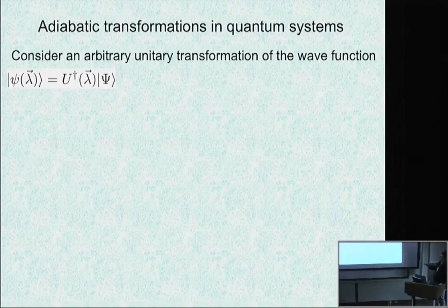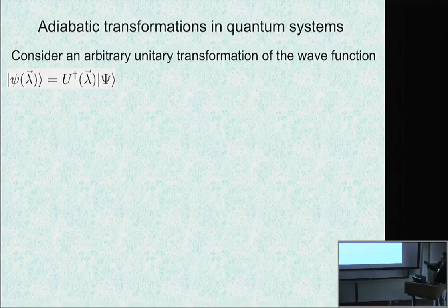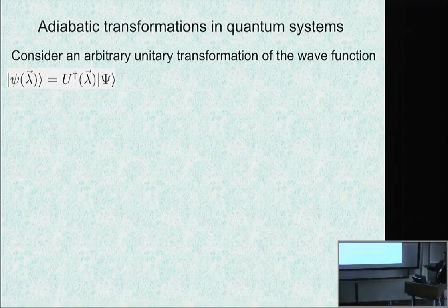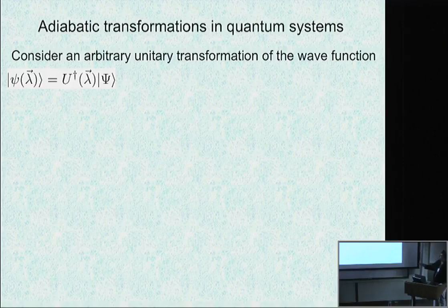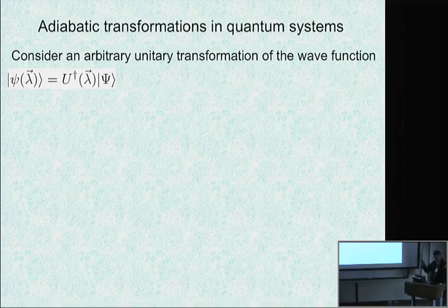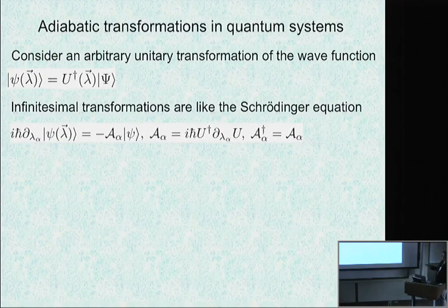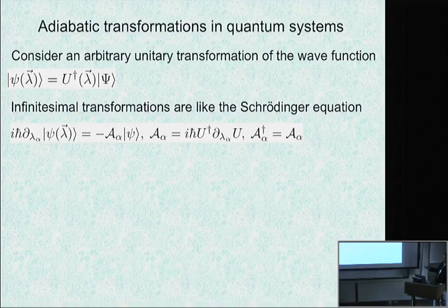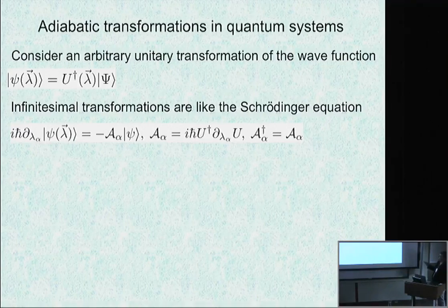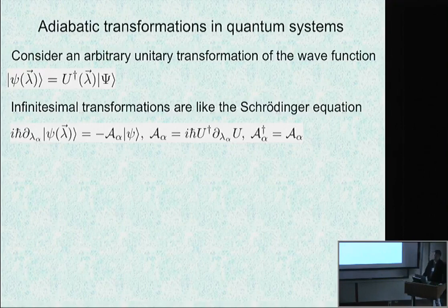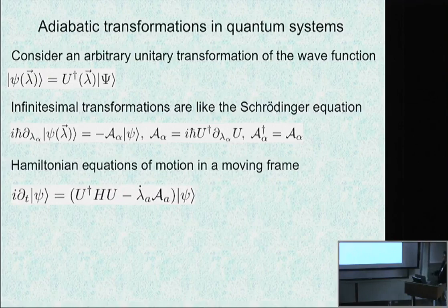Let's assume we have some wave function. Quantum mechanically, we rotate our wave function or rotate the basis. Assume we do some continuous rotation differentiable with respect to some parameter lambda - could be position, magnetic field, whatever you like. If it's differentiable, I can differentiate with respect to lambda. After staring a little bit, we get basically a Schrödinger equation.